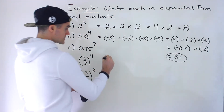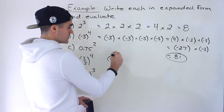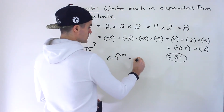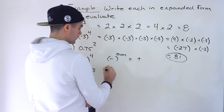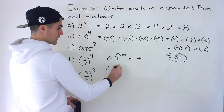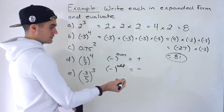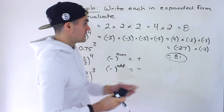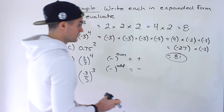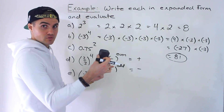As a general heads up: whenever you have a negative base to the power of an even exponent — we have an even number which is 4 — that's always going to give you a positive value. But whenever you have a negative base to the power of an odd number — we're going to see that in part e — the final answer will be negative. For example, negative 3 to the power of 3 would have given us negative 27.